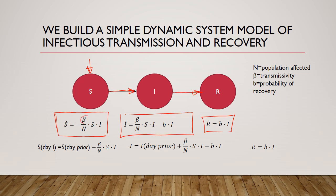You'll notice there's something important in here, and that is this factor beta, which is the probability of transmission from an infected person to a susceptible person. And N, which is the total population within which the virus is circulating. We're multiplying the susceptible and infected populations together, and those are then adjusted by this pre-factor, which has to do with transmissibility and the size of the population.